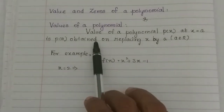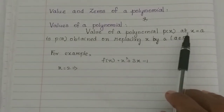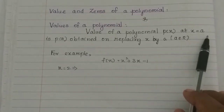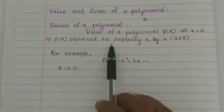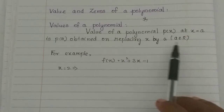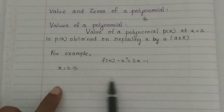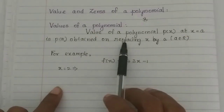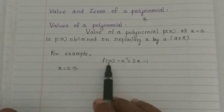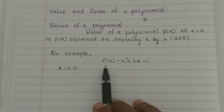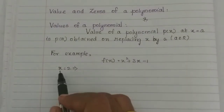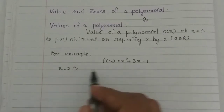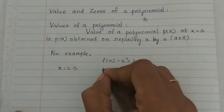So, the value of a polynomial p of x at x equal to a is p of a, obtained by replacing x by a. For example, f of x is a polynomial. In this polynomial, we will substitute x with a value.